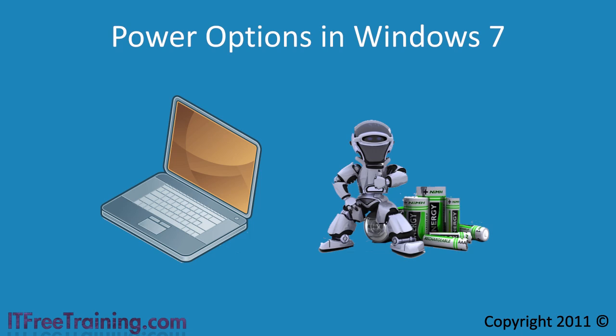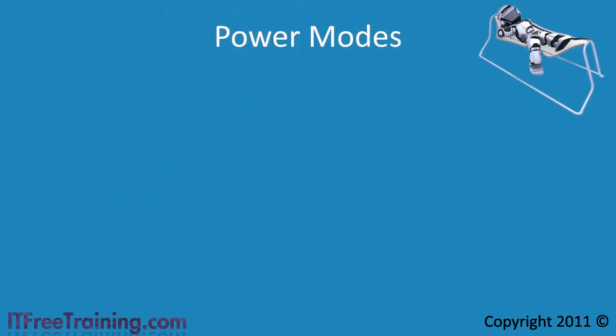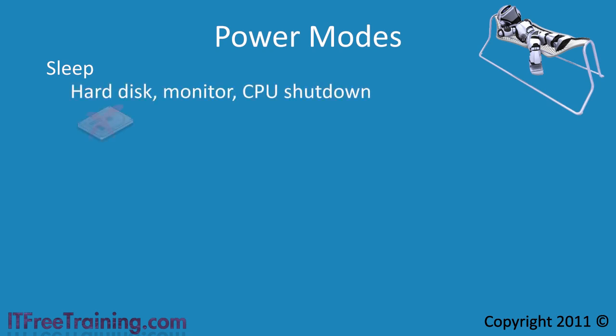Before I get started on power configuration settings in Windows 7, I first want to define a few power modes used in Windows 7. The first is sleep mode. When the computer is put into sleep mode, non-essential devices are shut down. These include the hard disk and monitor. Also, CPU power consumption is reduced.